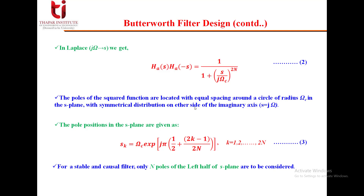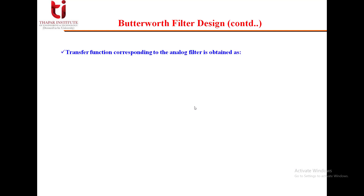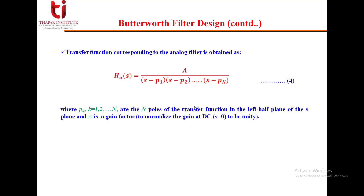For a stable and causal filter, we consider only the poles lying on the left half of the S-plane, meaning we consider only N poles. The transfer function for the analog filter is then obtained as A divided by (S − P1)(S − P2)···(S − PN), where A is a gain factor used to normalize the DC gain so that when S equals 0 the gain is unity.